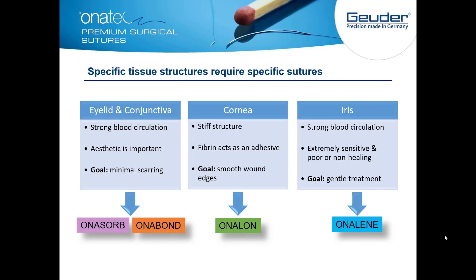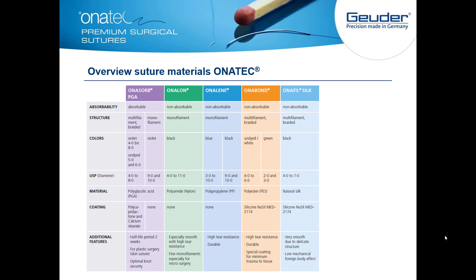Specific tissue structures require specific sutures. Onasorb and Onabond sutures are used for eyelid and conjunctival suturing, where strong blood circulation makes aesthetics very important and the goal is minimal scarring. Onalon has been a standard suture for cornea suturing in our clinic for many years, with very good results. The cornea has a stiff structure and fibrin acts as an adhesive, with the goal of smooth wound edges. For the iris, which is a strongly blood-circulating, extremely sensitive, and poor-healing tissue, Onaline is used for gentle treatment. A full overview of all Onatec suture materials is available in the handout after the webinar.